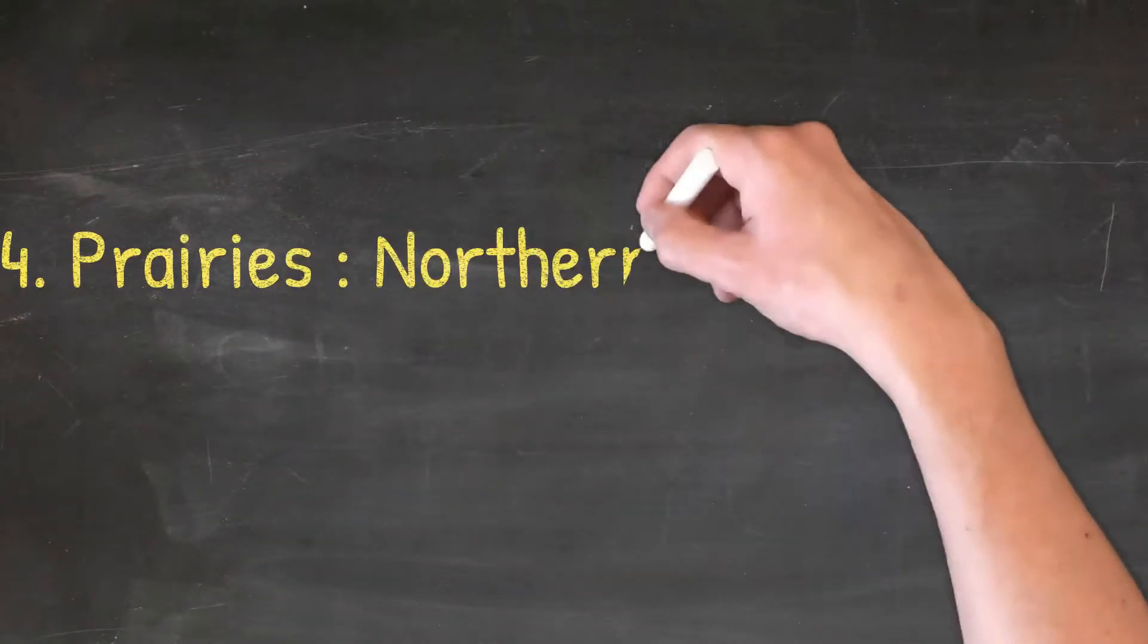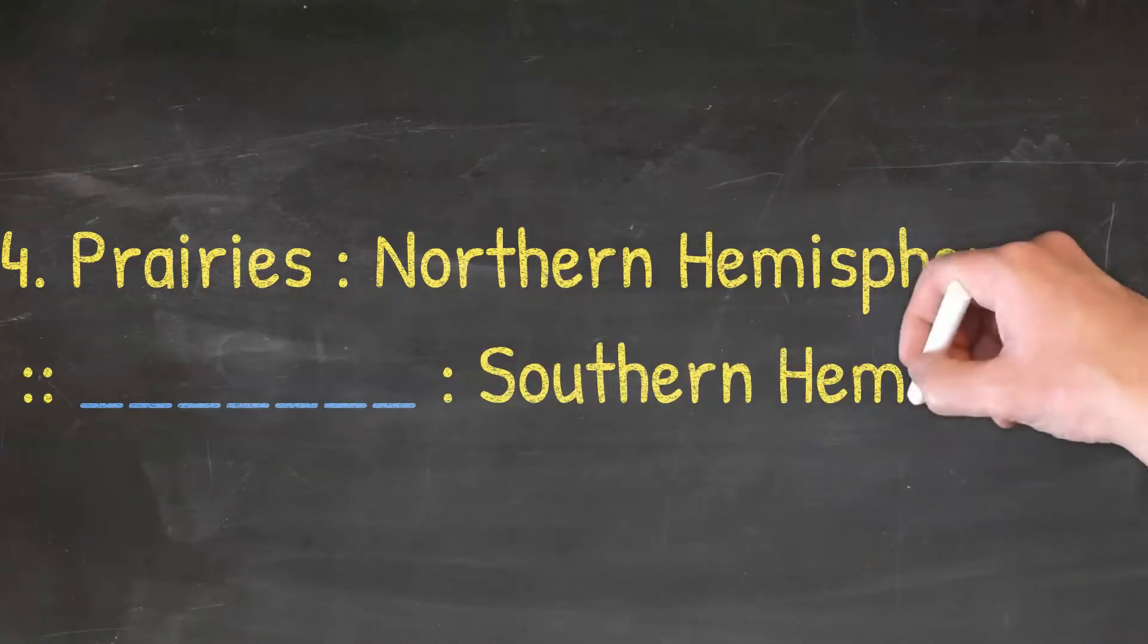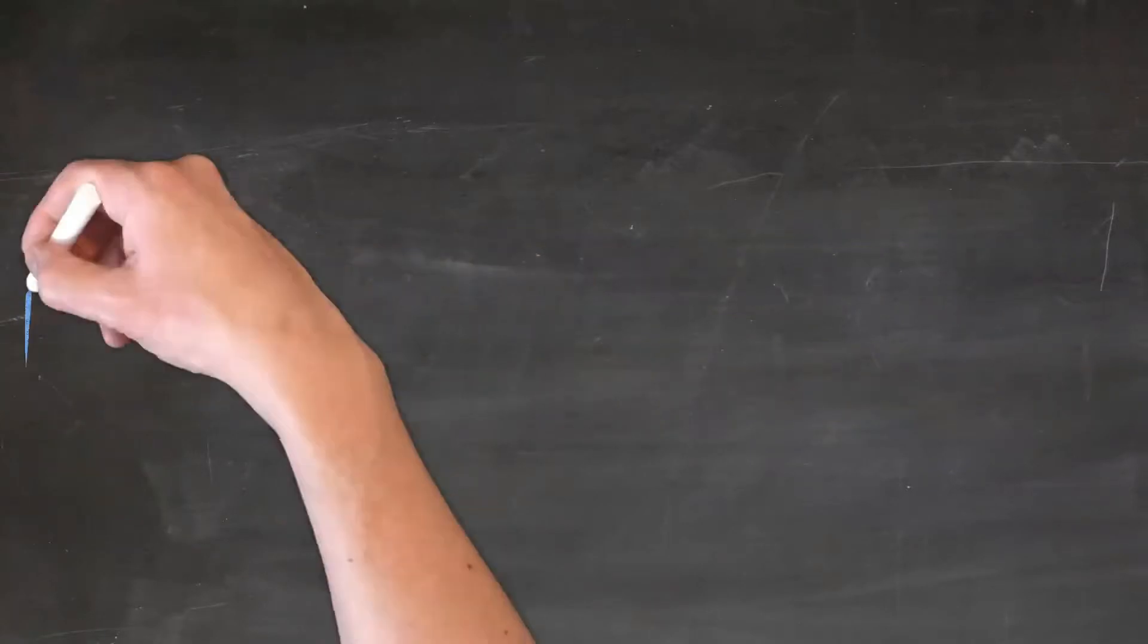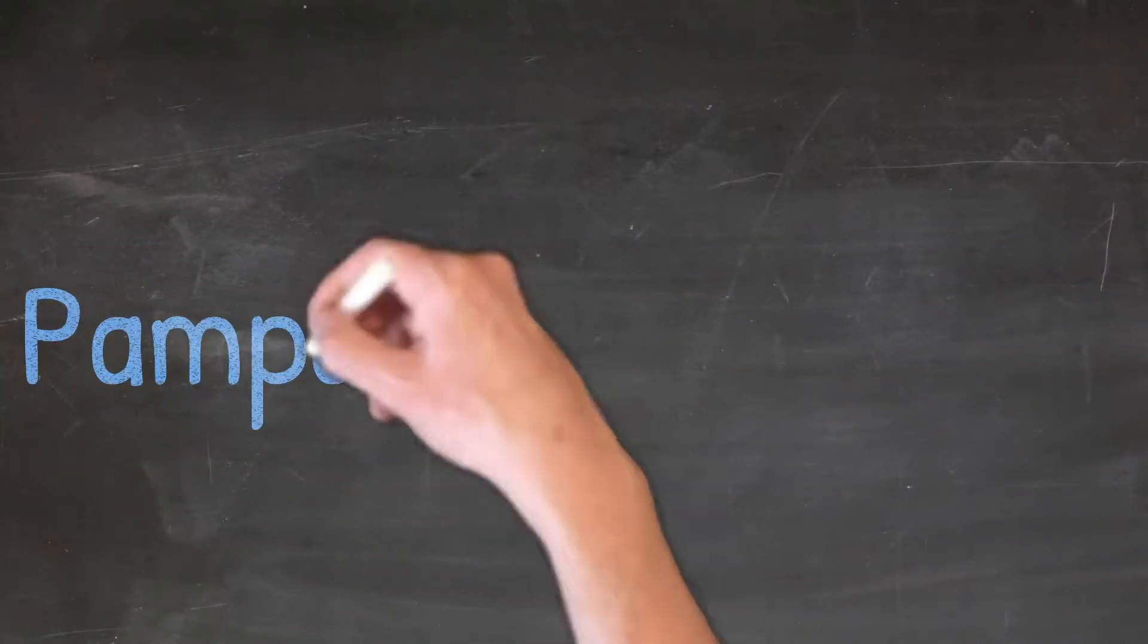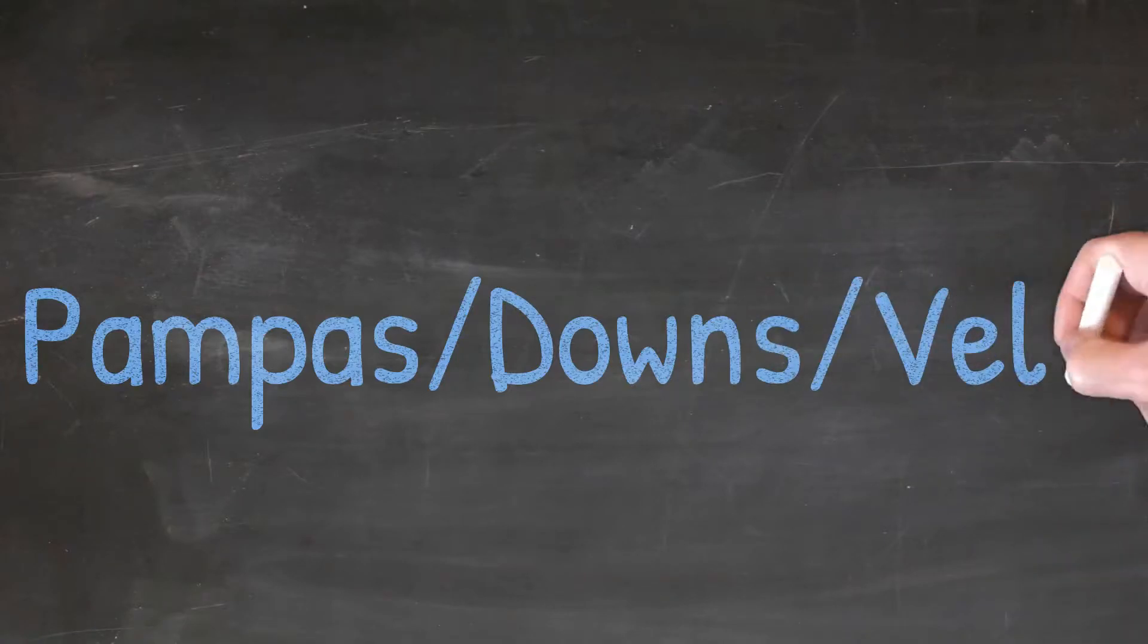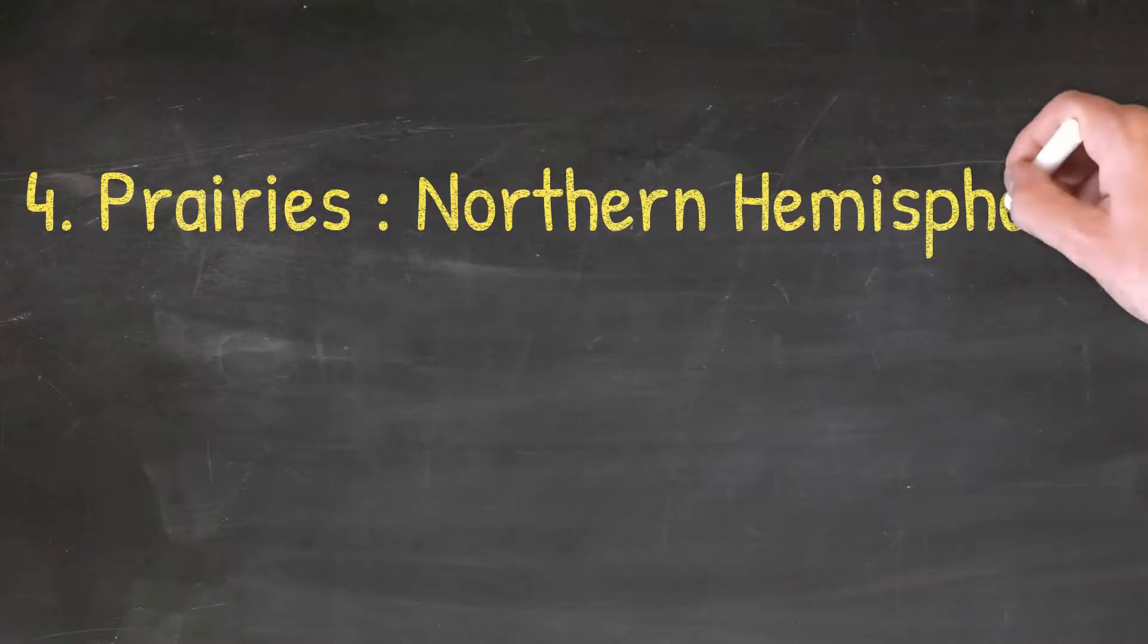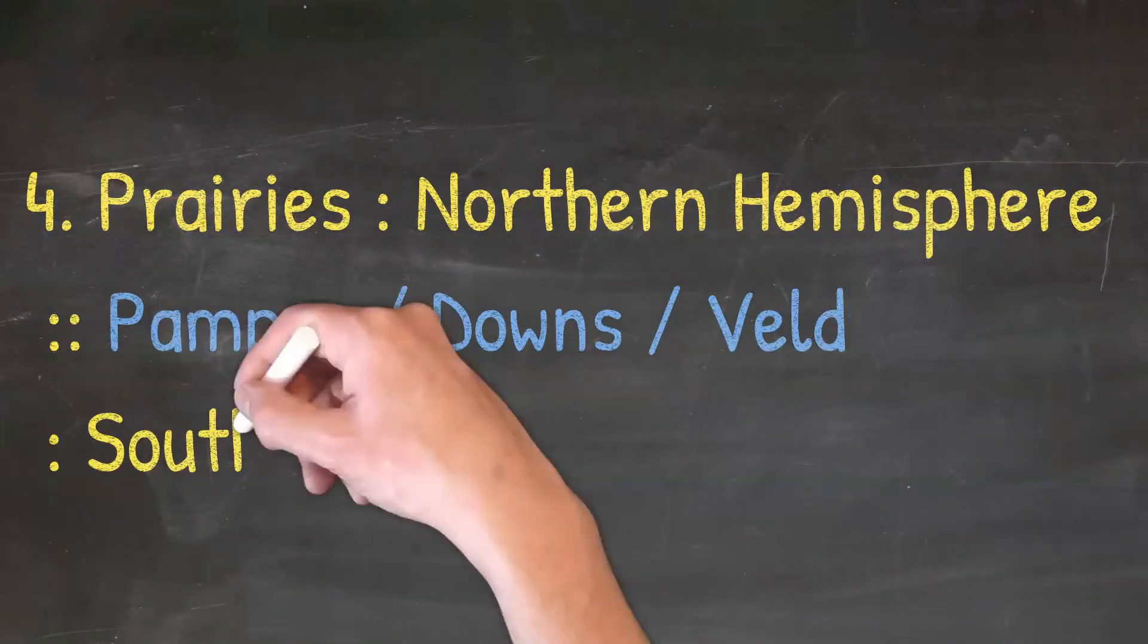Prairies, Northern Hemisphere, Dash Southern Hemisphere. And the answer can be Pampas, Downs, Weld. So, Prairies, Northern Hemisphere. Pampas, Downs, or Weld, Southern Hemisphere.